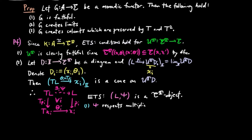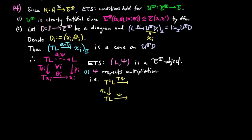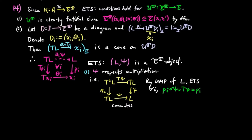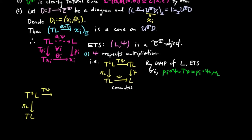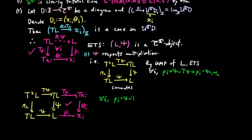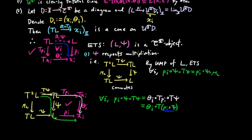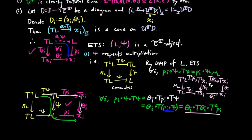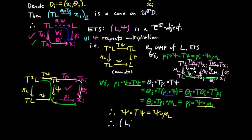We first show (1) that Xi respects the multiplication mu of the monad — in other words, Xi∘T∘Xi equals Xi∘mu∘L. By the universal mapping property of L, it is enough to show that for each I, PI∘T∘Xi equals PI∘Xi∘mu∘L. We postcompose the square by the projections: PI∘T∘Xi equals thetaI∘TPI∘T∘Xi. Factoring out T and using the commuting purple square, PI∘T∘Xi equals thetaI∘T∘thetaI∘T²PI. Since Xi thetaI respects multiplication and the left square commutes by naturality of mu, we have thetaI∘TPI∘mu∘L. Using the purple square again, we arrive at PI∘Xi∘mu∘L, which is what we wanted. Therefore, (L, Xi) preserves the multiplication mu.